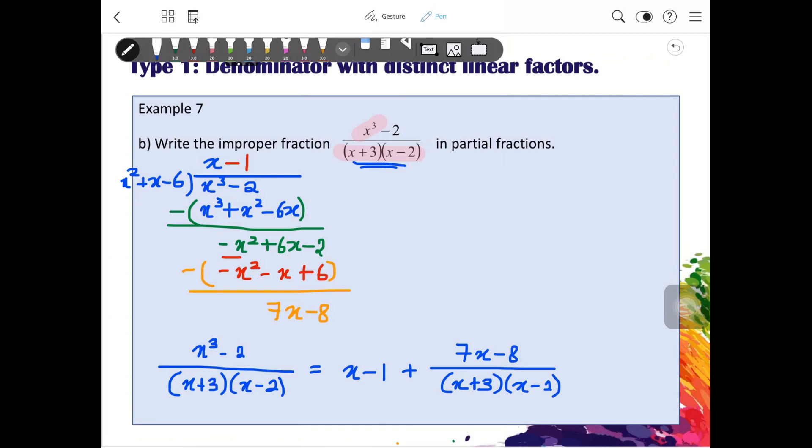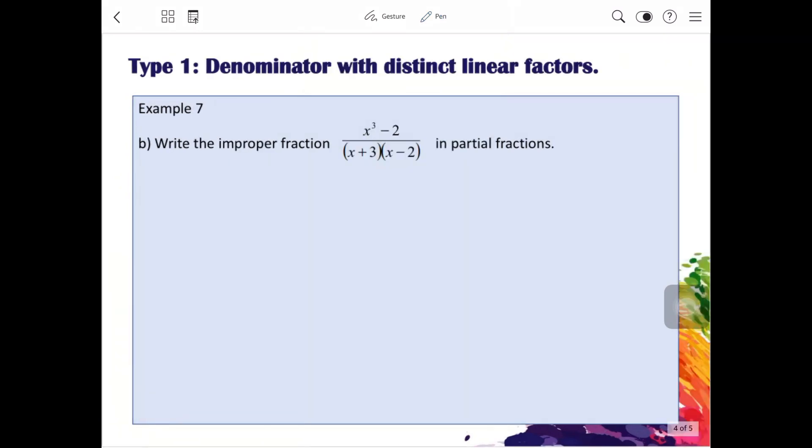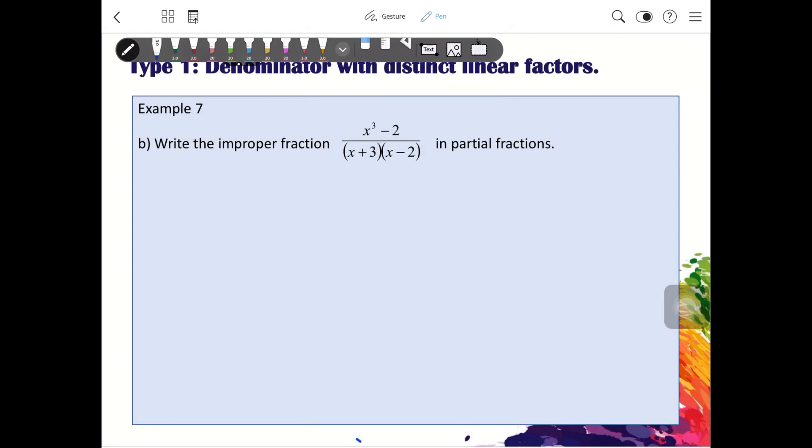So now what you have to do is to find the partial fraction for this, and then you will combine them together. So what we are going to do is only partial fraction for 7x minus 8 over x plus 3, x minus 2.